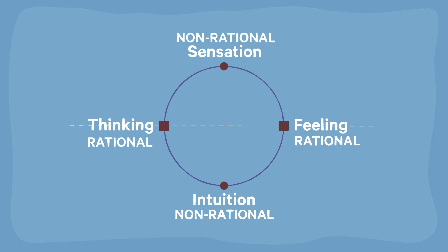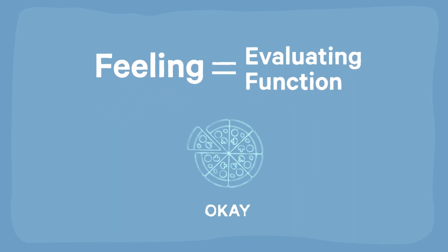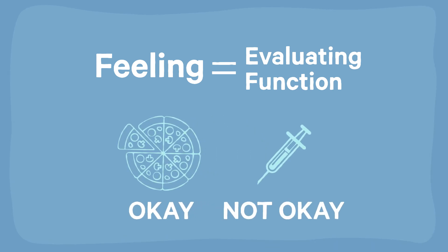You might be thinking, why is feeling rational? This could be because you confuse it with emotion. Feeling is an evaluating function concerned with the value of a thing. For example, it tells us that pizza is okay and pain is not okay. And Jung thinks this is compatible with reason.